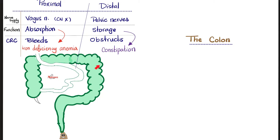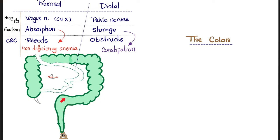Proximal colon versus distal colon: the vagus nerve supplies the proximal, the pelvic nerve supplies the distal — all parasympathetic, the hero of the digestive tract. The sympathetic: greater splanchnic versus lesser splanchnic nerve. The function of the proximal colon is absorption mainly, and the function of the distal colon is storage mainly. The rectum's ability to store stool is impressive. Distention of the rectal mucosa is what triggers the defecation reflex, giving you the urge to go to the toilet.